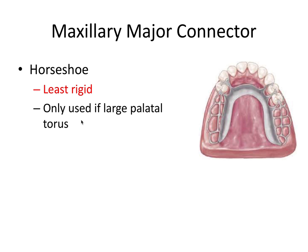The horseshoe design is really only preferred when there's a large palatal torus, and you can see how that would be helpful because the horseshoe design allows you to bypass and not interact with that torus. If the patient didn't want to have it removed — remember from pre-prosthetic surgery, a big palatal torus should be removed if it interferes with the posterior palatal seal for a complete denture — but for a partial denture you could work around it with the horseshoe design if the patient didn't want to go through that surgery.